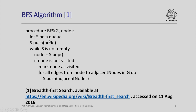Remember, for depth first search, we treated S as a stack. Since it is a queue, the queue push will always happen at the back of the queue. So, we will push the node here. While S is not empty, we will do the following: we will pop the node, and if the node is not visited, we mark the node as visited, and for all edges from the node adjacent in G, we push the adjacent nodes onto the queue.